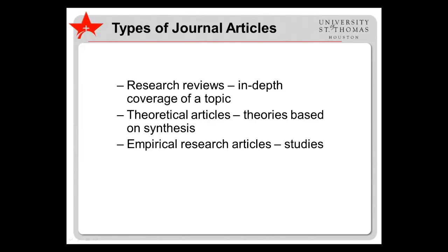Some journal articles describe theories based on a synthesis of existing literature. For example, drawing on the literature on resilience and coping, researchers may propose a theory of risk and protective factors from first-generation college students' performance. Theoretical articles are helpful for understanding how topics might fit together and for getting an overview of the topic.